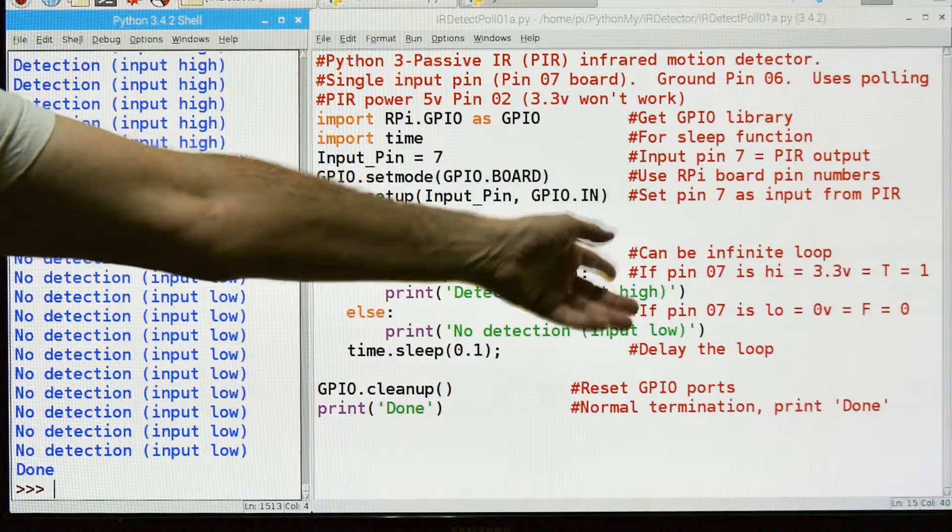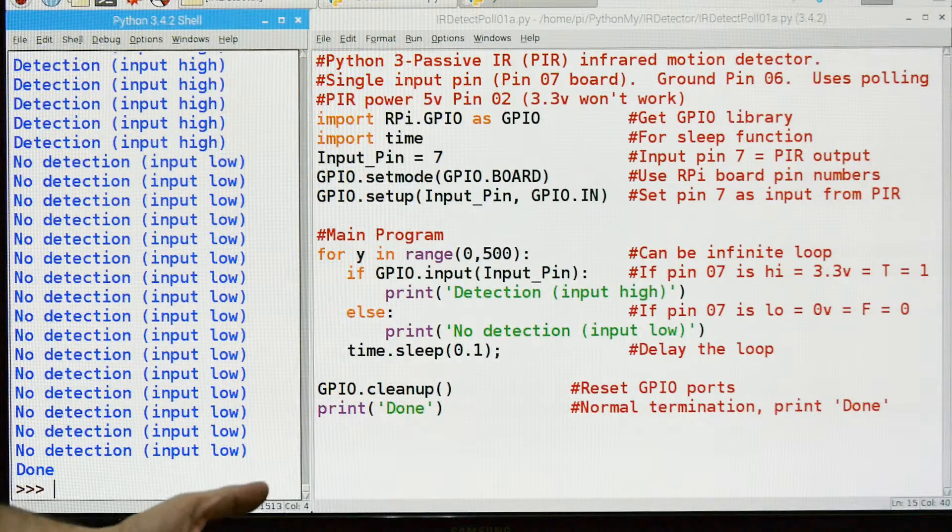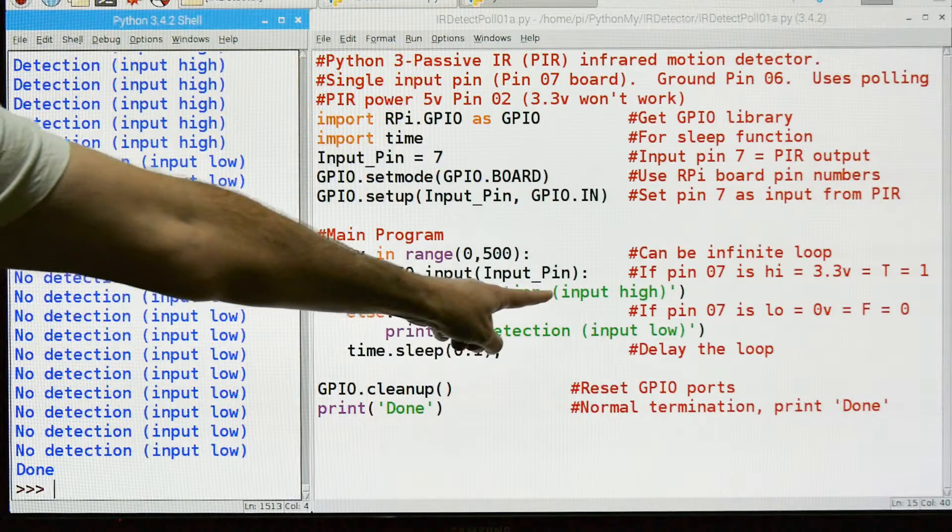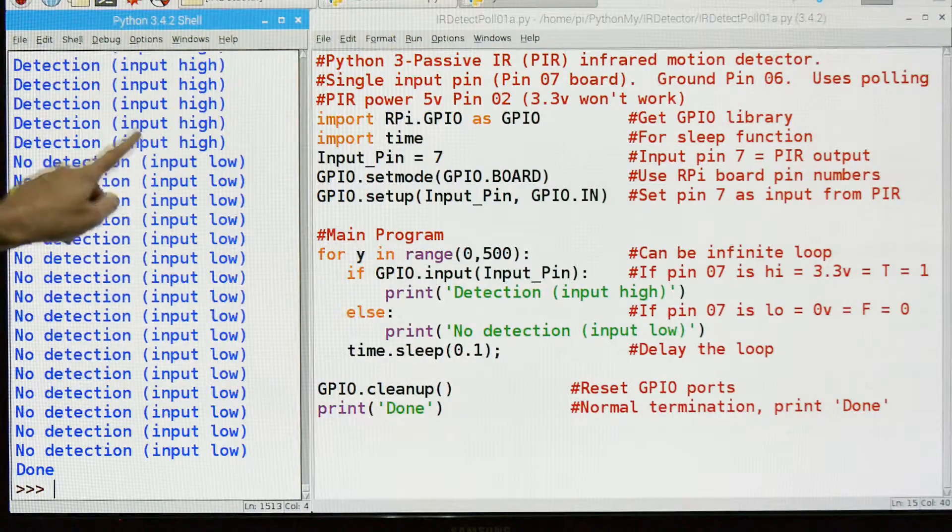Which means it's high. It's 3.3 volts. It's equal to 1. However you want to say that. But it's high. Then we're going to print the message detection input high. We saw that over here.